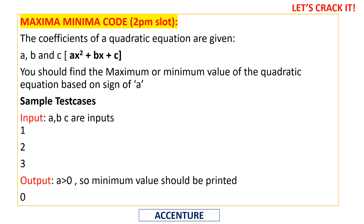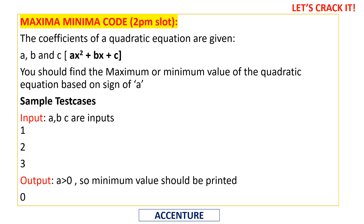The first question gives us three values a, b, c — the coefficients of a quadratic equation. The standard form is ax² + bx + c. We need to implement a function to find the maximum or minimum value, which depends on the sign of a. In sample test case one, inputs are a=1, b=2, c=3 and the output is zero, which is the minimum value because a is greater than zero — a positive a means the quadratic has a minimum value.